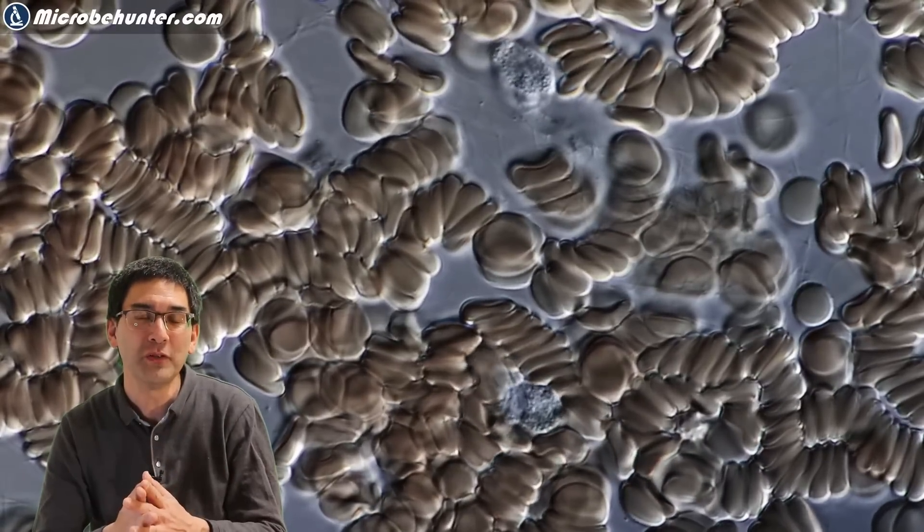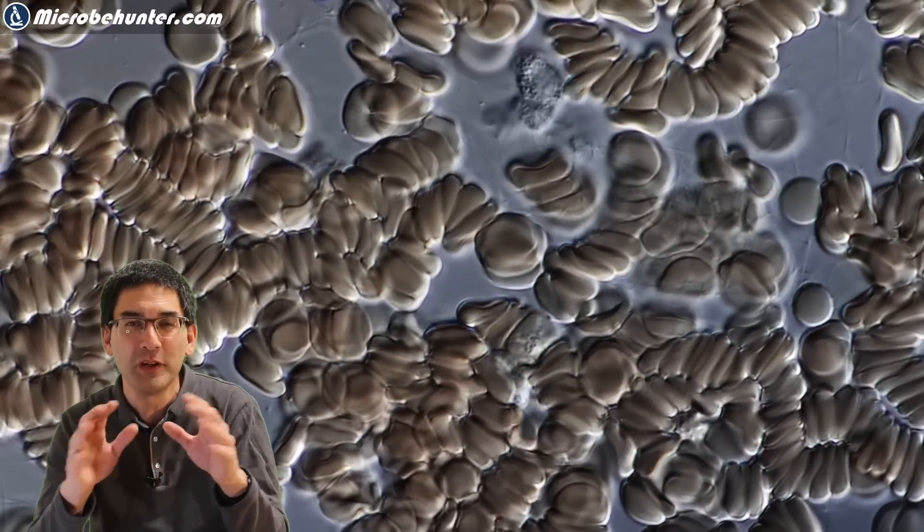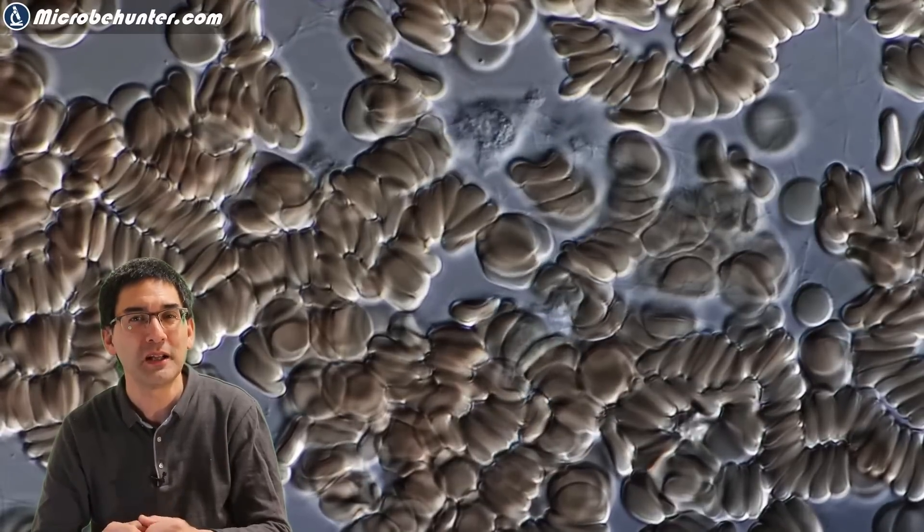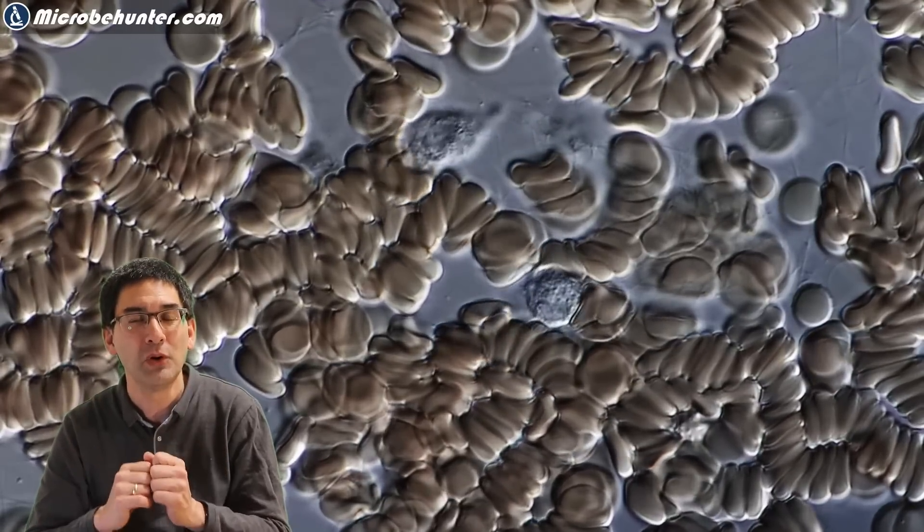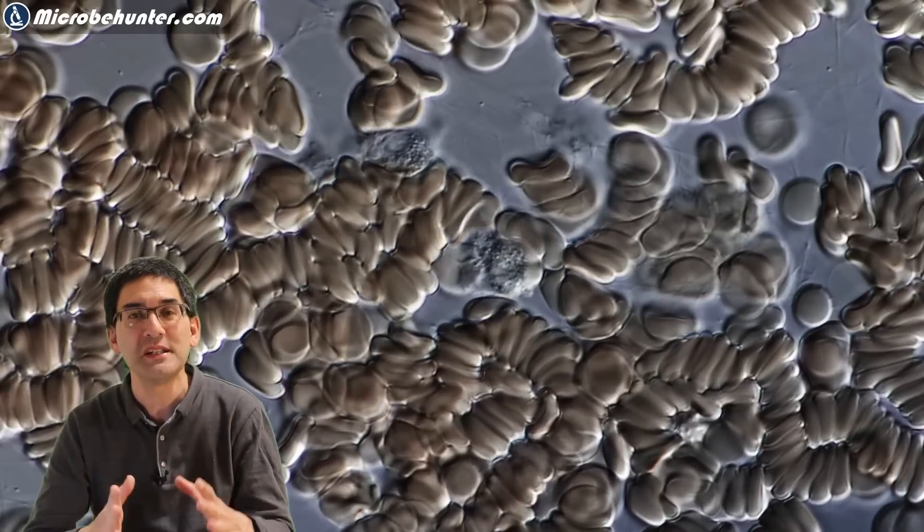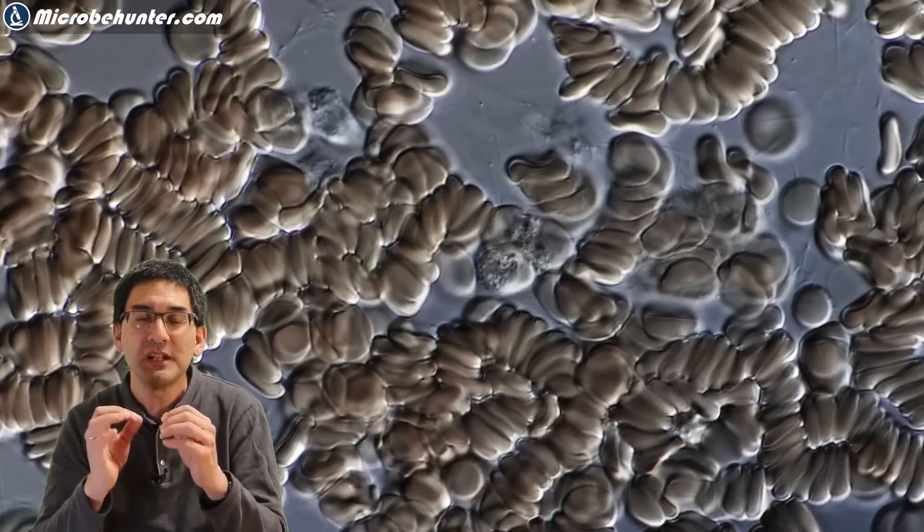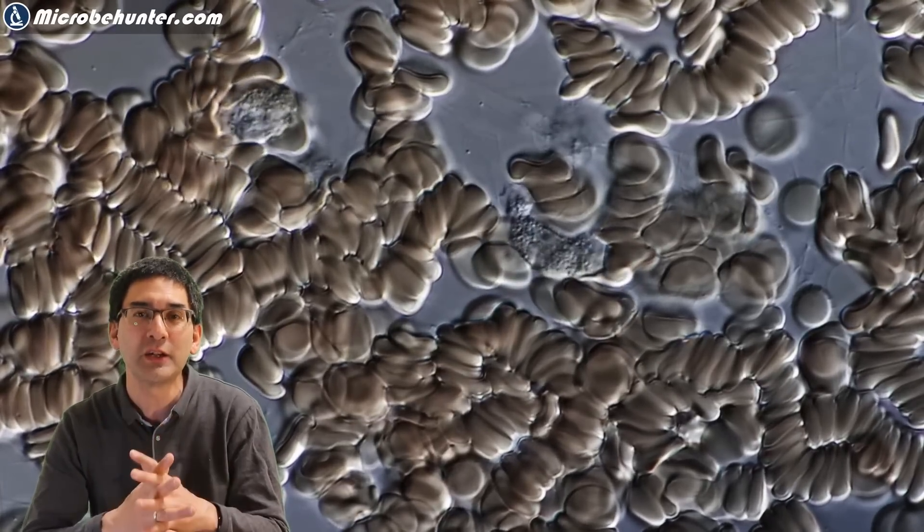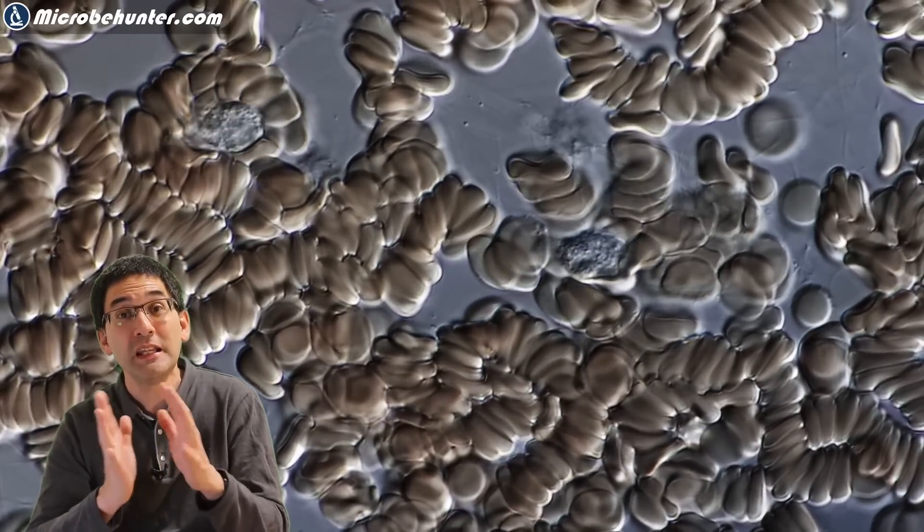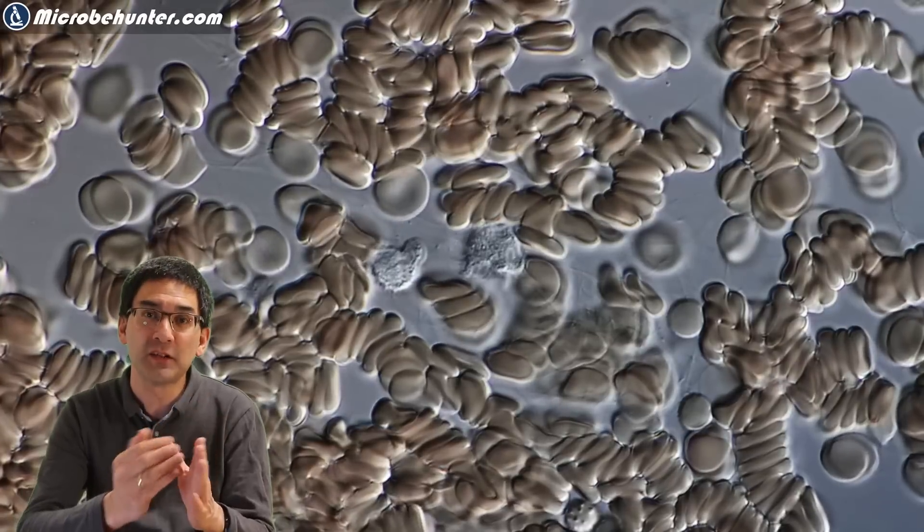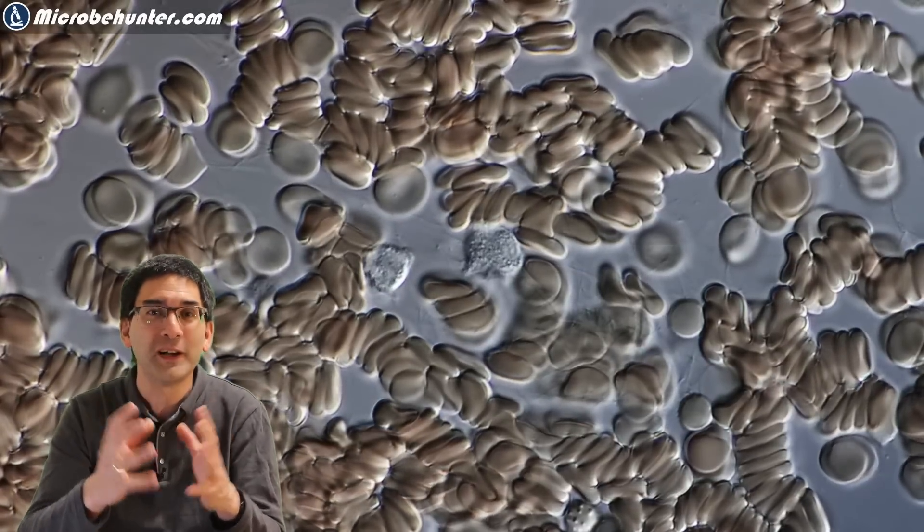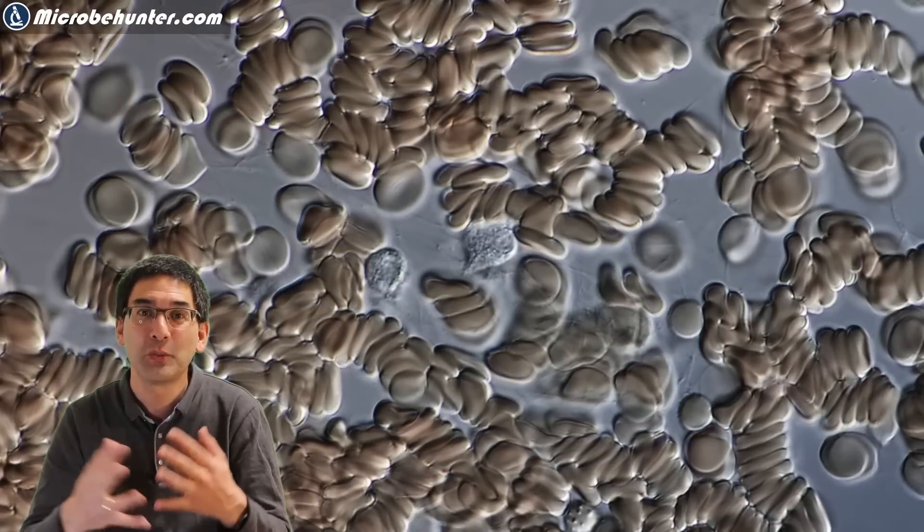While I was observing those phagocytes moving around, I also want to tell you they do the same thing in our human body. What they do is they attach themselves to the inside of a blood vessel, and when there is an injury they will move towards the site of infection. They are even able to leave the blood vessel to go into the tissue to fight off the pathogens there.